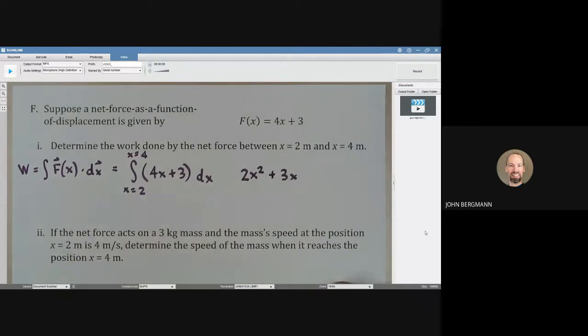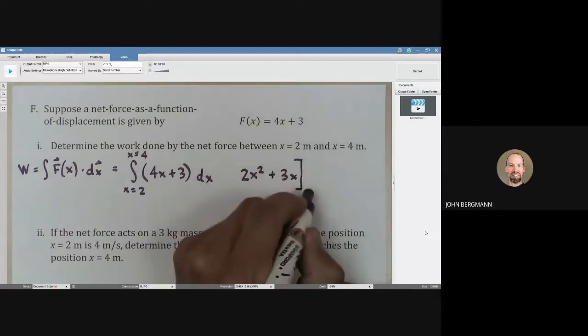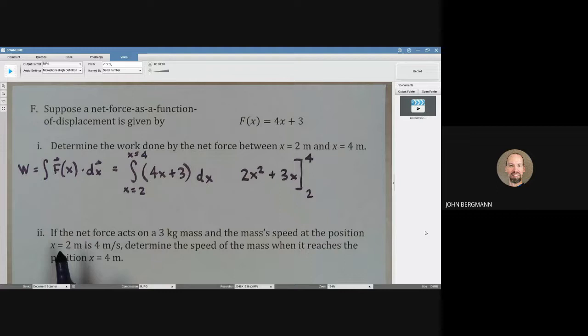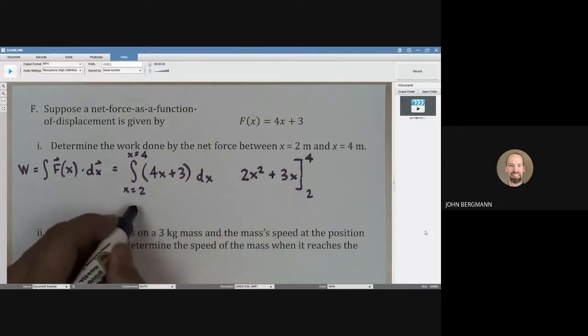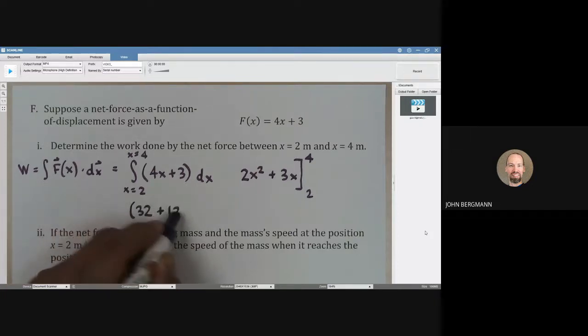We don't need our constant of integration because this is a definite integral with endpoints. Let's just evaluate this integral from x equals 2 to x equals 4. So let's do the 4 first. If we put a 4 in here, that's going to be 16 times 2. Shall I show my work here? We're going to have 32 plus 3 times 4 is 12.